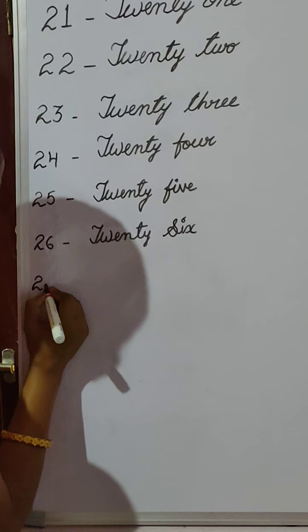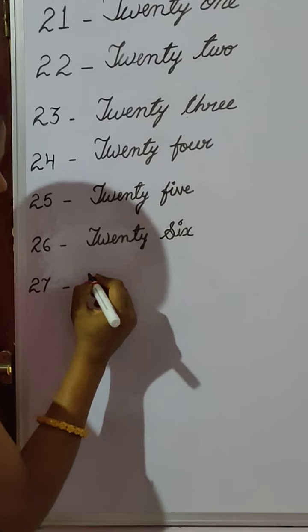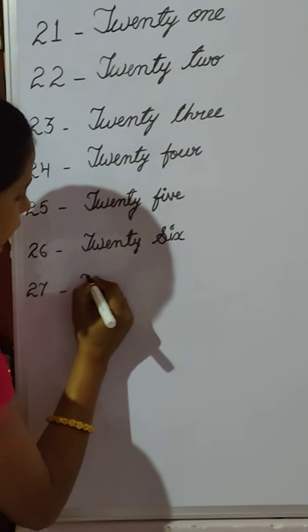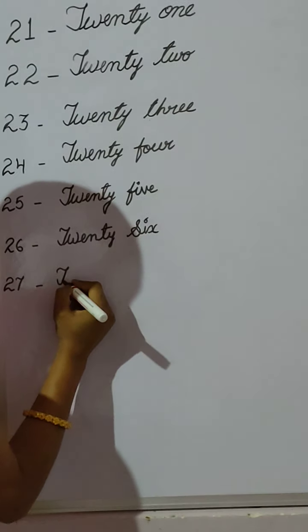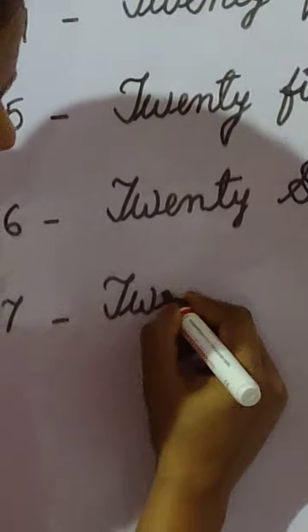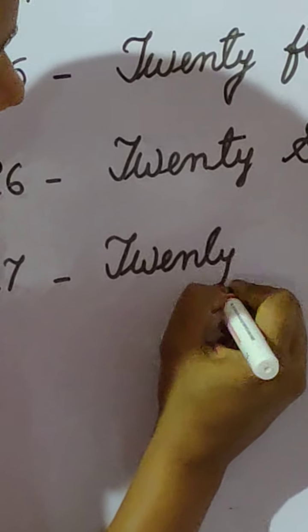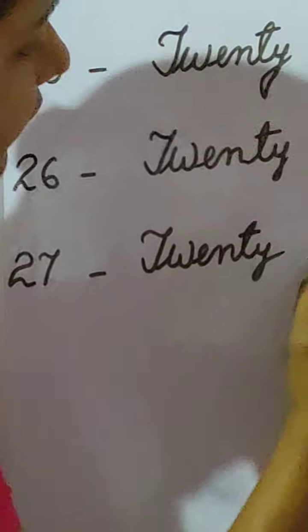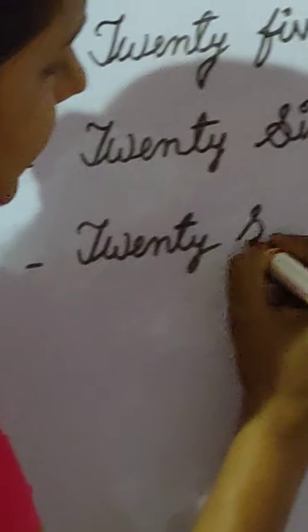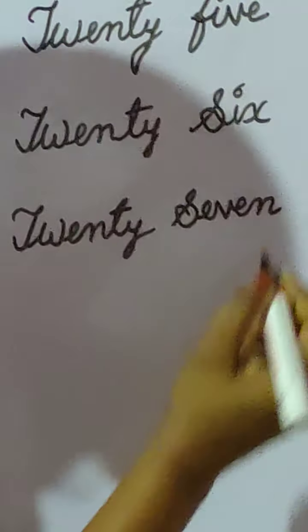Then, we have to write the spelling of 27. T, W, E, N, T, Y — 20. Then SEVEN — S, E, V, E, N — 7. TWENTY-SEVEN. 27.